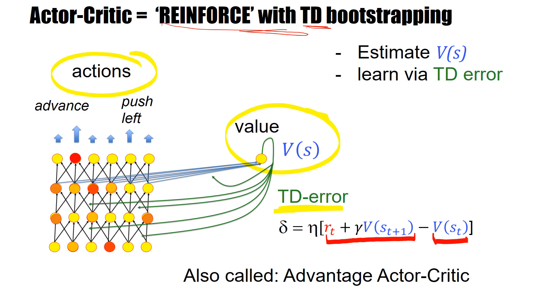Some people call it the advantage actor-critic and they would also call the reinforce with baseline subtraction that was presented in the previous video an actor-critic architecture. Both are sort of actor-critic. The V-value is sort of the critic. And let's really now compare these two algorithms.